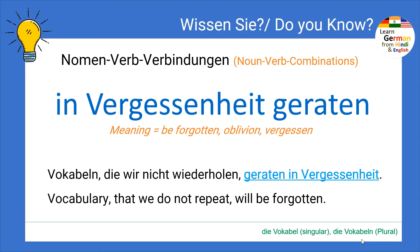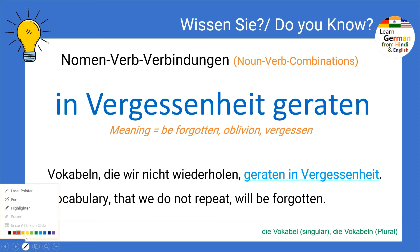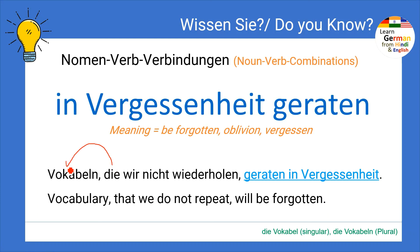Deswegen sage ich euch Vokabeln zu wiederholen. That's why I tell you all that you should repeat and wiederholen your vocabulary. Here, Vokabeln is written in plural as it is indicating to the plural form — this 'die' here is indicating to Vokabeln and 'die' here is plural.